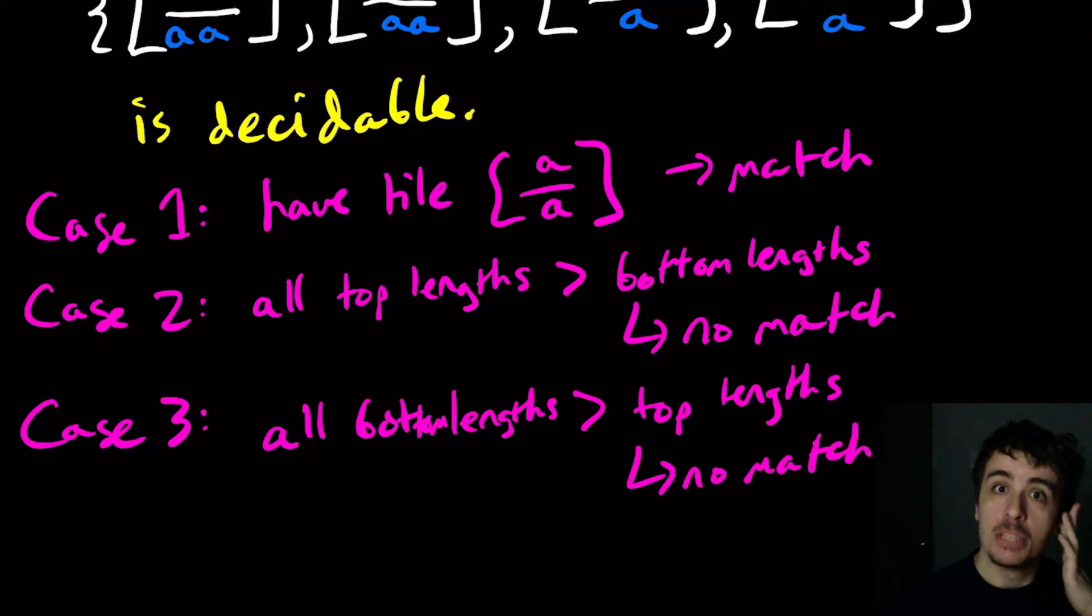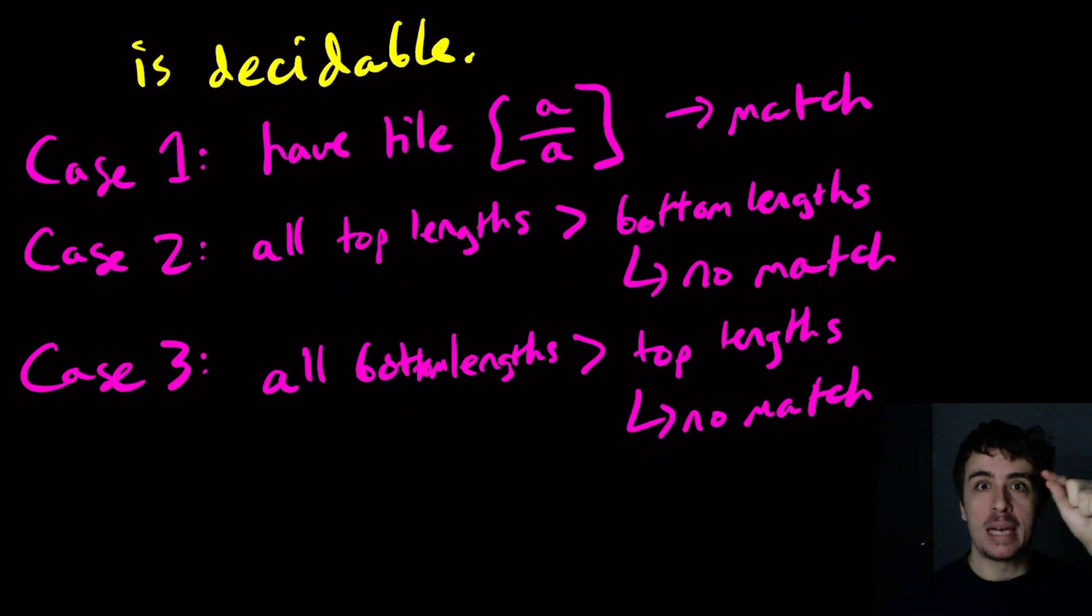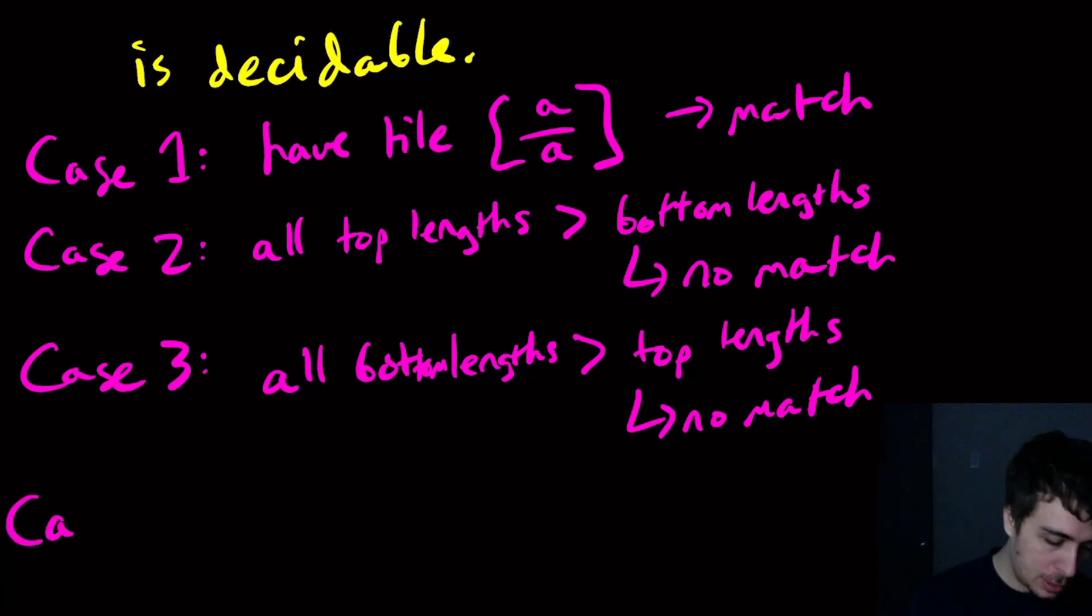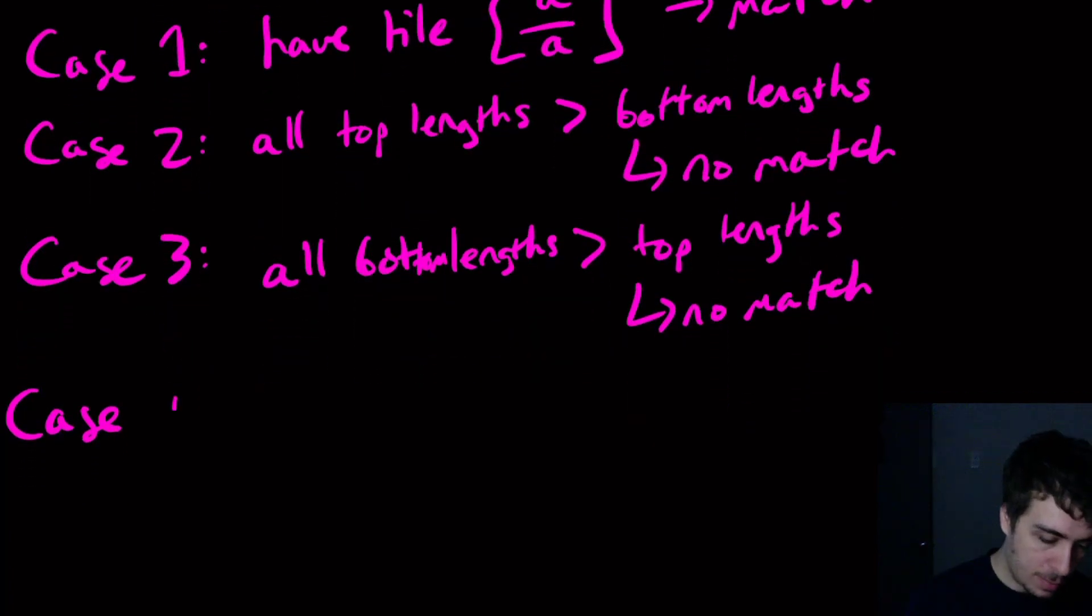Then we get exactly the same conclusion. So no match. So then the only possibility otherwise is that we have one tile that has the top bigger than the bottom and another one where the bottom is bigger than the top.